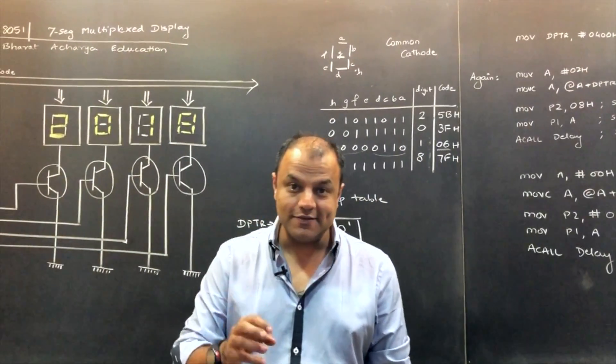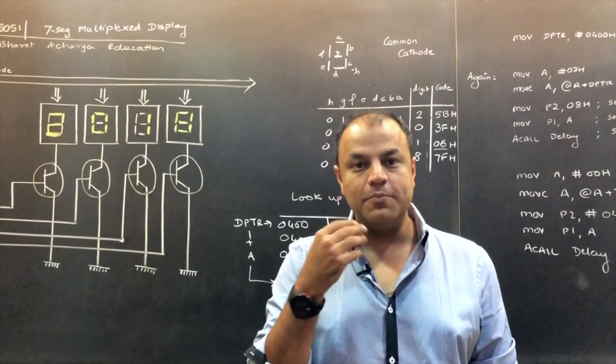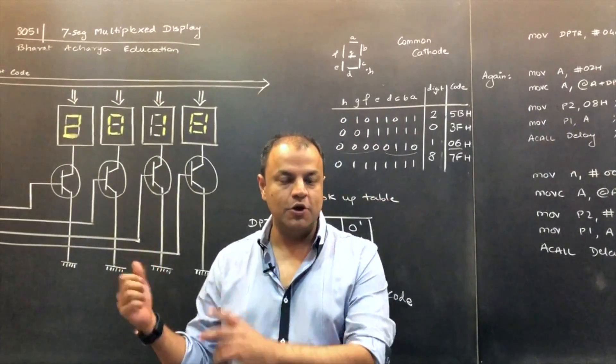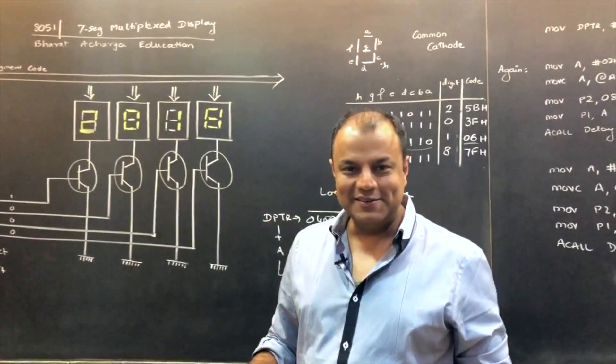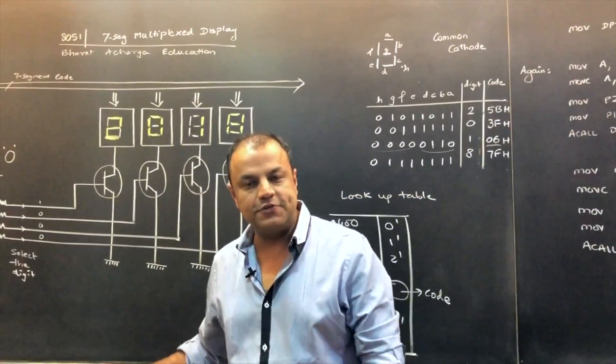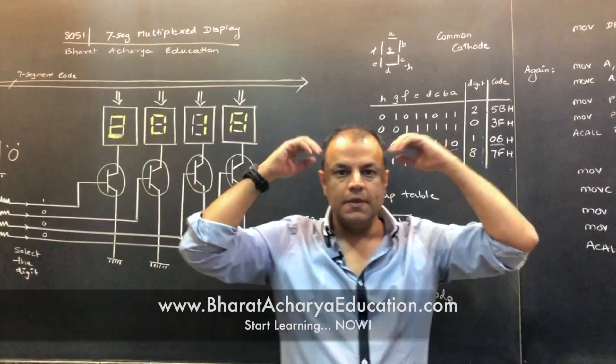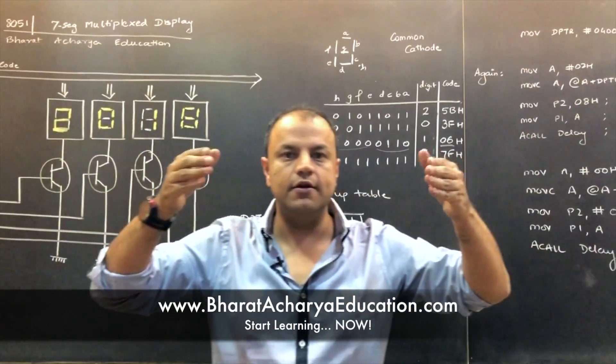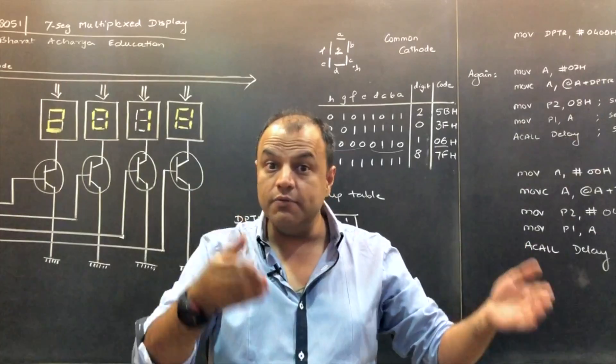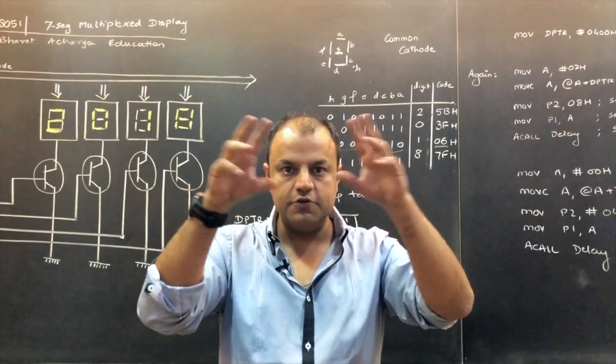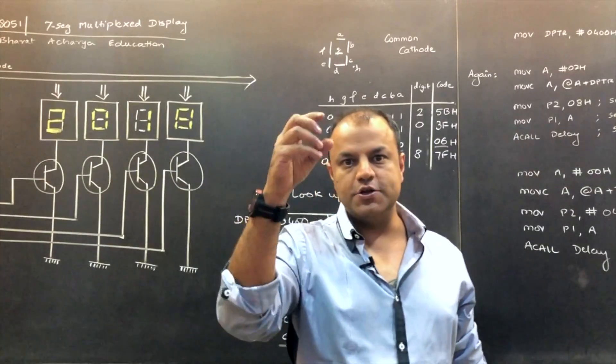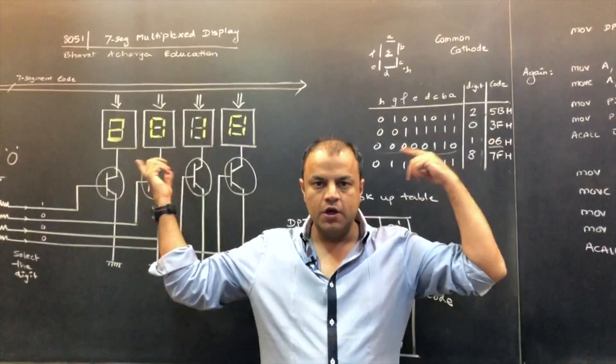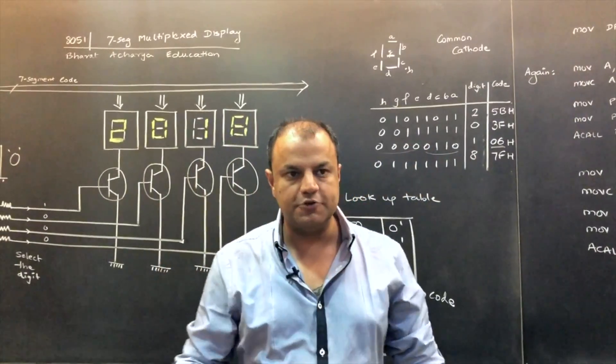It uses a very interesting biological property of persistence of vision to manage to display four digits in such a way that we feel all four digits are on together. Just to give you an idea, where is this used? It's used everywhere. I'm sure you've seen in taxi meters, in railway stations, in traffic signals, where you see those counters in your lift, in your elevator, where it shows the floor number and so on. There are so many places where you see a multi-digit seven-segment display.